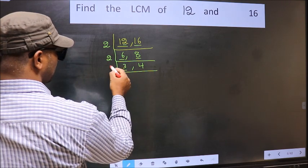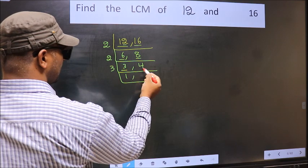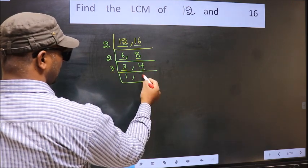Now here we have 3. 3 is a prime number so 3, 1 is 3. The other number 4. 4 not divisible by 3 so we write it down as it is.